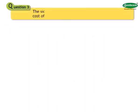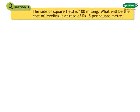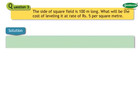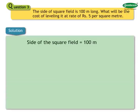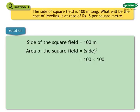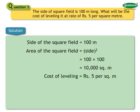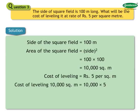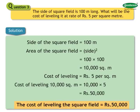Number 3: The side of a square field is 100 meters long. What will be the cost of leveling it at a rate of Rs. 5 per square meter? Solution: Area of square field equals 100 into 100 equals 10,000 square meters. Cost of leveling 10,000 square meters equals 10,000 into 5 equals Rs. 50,000. The cost of leveling the square field is Rs. 50,000.